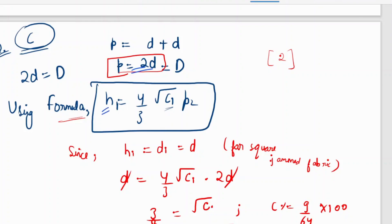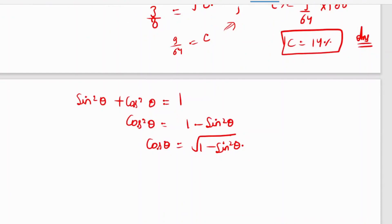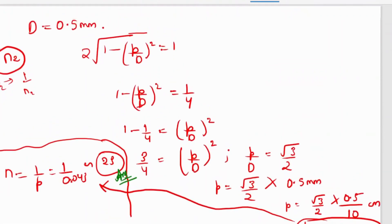Since it is a square fabric, h1 = 4/3 × √(c1 × p2). Since h = d1 = d, and it is given that p = 2d, yarn diameter d1 = d. Solving for crimp, we find crimp = 14 percent.